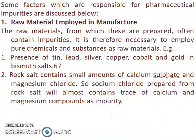Some factors responsible for pharmaceutical impurities are discussed below. First, raw material employed in manufacture: the raw materials from which these are prepared often contain impurities. It is therefore necessary to employ pure chemicals and substances as raw material. For example, presence of tin, lead, silver, copper, cobalt, and gold in bismuth salts. Rock salt contains small amounts of calcium sulphate and magnesium chloride, so sodium chloride prepared from rock salt will almost certainly contain traces of calcium and magnesium compounds as impurities.